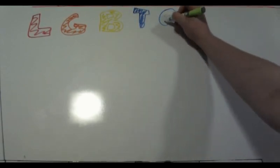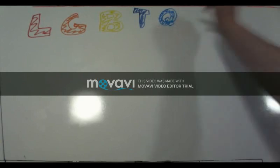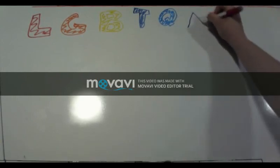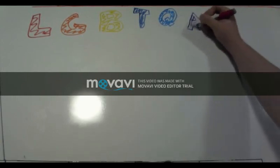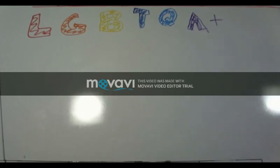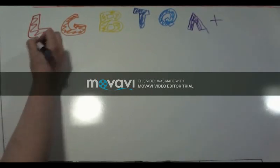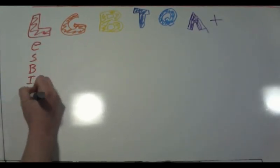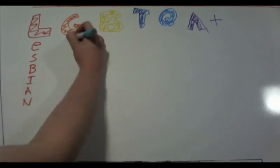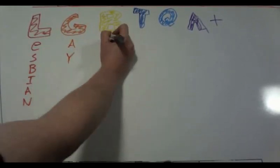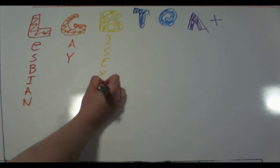While there are a number of terms in there, when you break the acronym down, it's pretty easy to see what's going on. L is for lesbian, or women who are attracted to women. G is for gay, or men who are attracted to men. B is for bisexual, or people who are attracted to multiple genders. Not two, but we'll get to that in a bit.